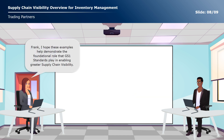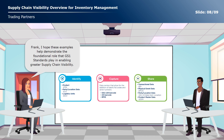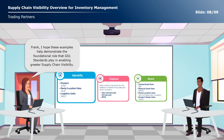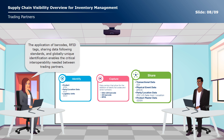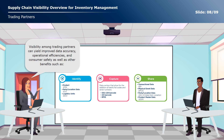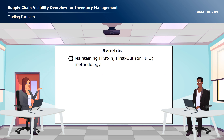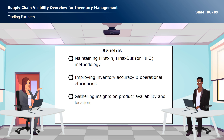Frank, I hope these examples help demonstrate the foundational role that GS1 standards play in enabling greater supply chain visibility. The application of barcodes, RFID tags, sharing data following standards, and globally unique identification enables the critical interoperability needed between trading partners. Visibility among trading partners can yield improved data accuracy, operational efficiencies, and consumer safety, as well as other benefits such as maintaining first-in, first-out (FIFO) methodology, improving inventory accuracy, gathering insights on product availability and location, and avoiding waste and ensuring freshness.